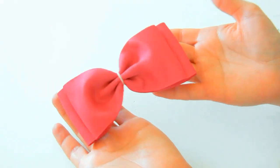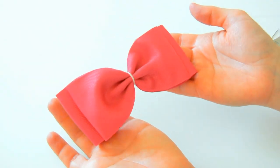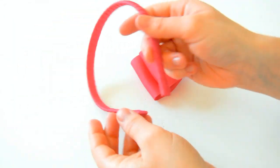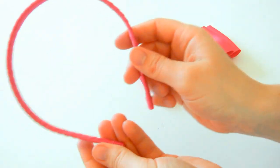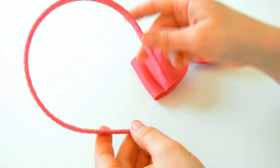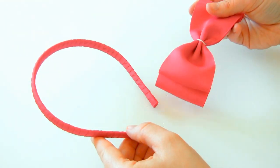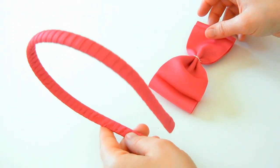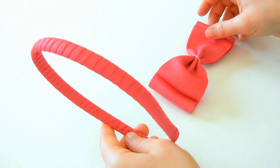That finishes our bow part, and now we're going to add it to the headband. Here's my ribbon-wrapped headband. These are really easy to make and they're awesome because you can match the color to the bow by using the same color grosgrain ribbon. You can see the instructions for how to do the ribbon-wrapped headband in our video description.